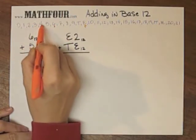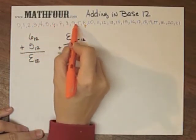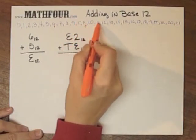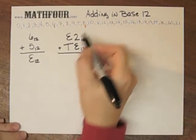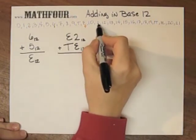So here's 2. 1, 2, 3, 4, 5, 6, 7, 8, 9, 10, 11. Interesting that 2 plus E is 11.